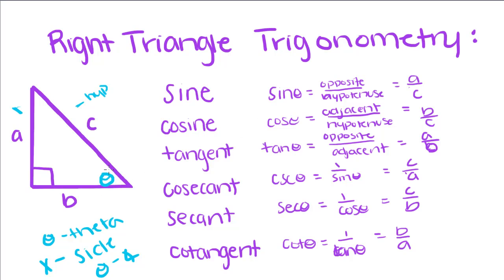Cosine is, we're talking about this angle, the adjacent side, which is the side right next to it, which is B, over the hypotenuse, which is still this side. So, this is B over C.